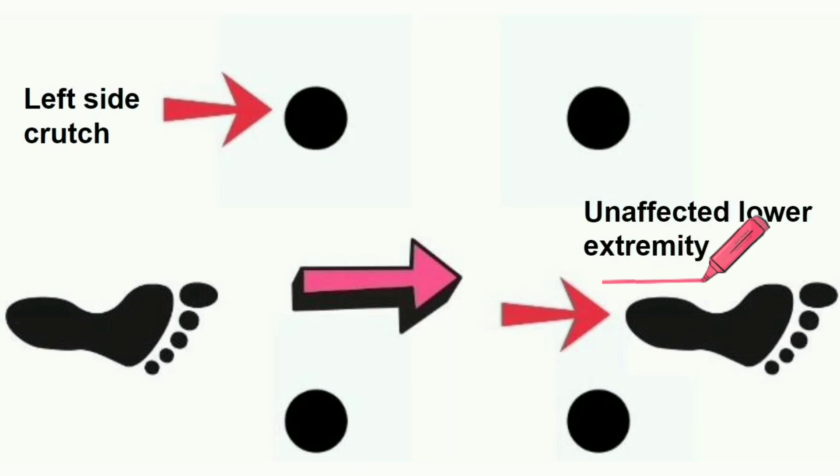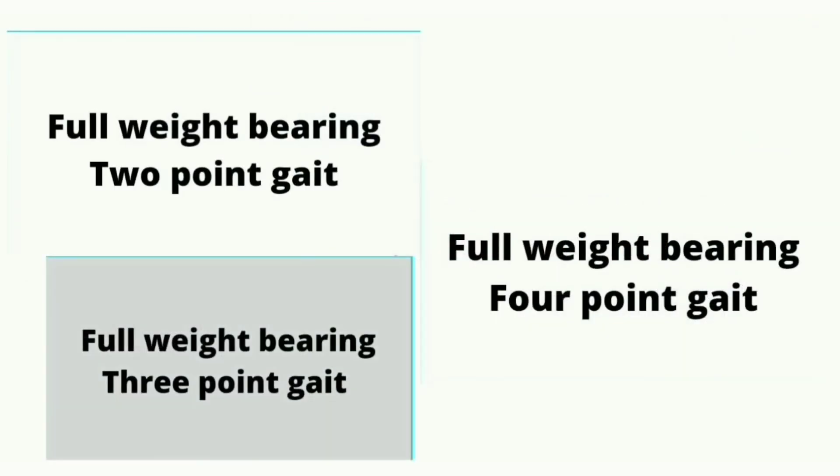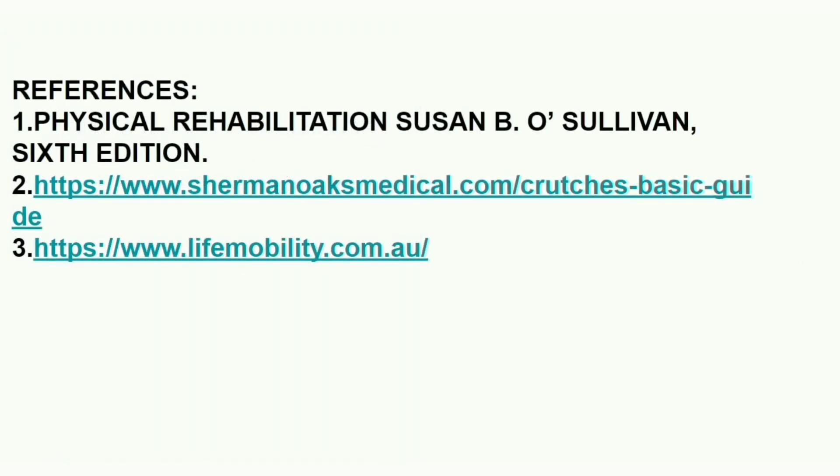The unaffected lower extremity should be placed crossing both crutches. If that is initially difficult, first bring the unaffected lower extremity to the crutches, and then progress beyond the crutches.